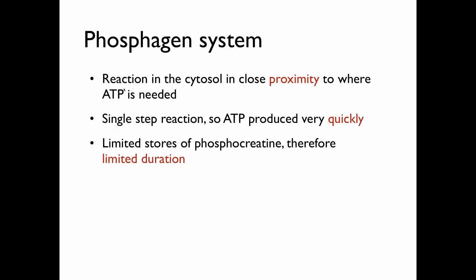One of the great things about the phosphagen system is that the reactions happen in the cytosol, which leaves ATP production in very close proximity to where it is needed. Recall your cytoskeletal proteins — proteins involved in contraction are in the cytosol, and many other ATP-requiring pathways are also located in the cytosol. The other wonderful thing about the phosphagen system is that it's a single step reaction, so ATP is produced very, very quickly.